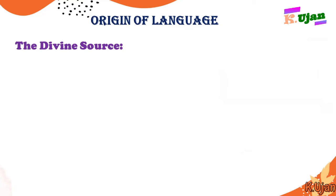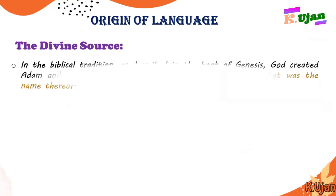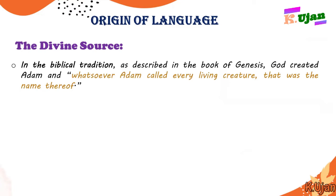We are going to begin with the very first source of language, and that is the divine source. In the biblical tradition, as described in the Book of Genesis, God created Adam, and whatsoever Adam called every living creature, that was the name thereof. So whatever Adam called the things, naming things was actually the beginning of language according to biblical tradition.